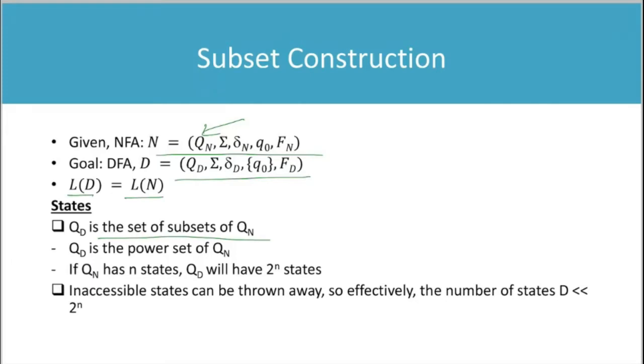QD is the power set of QN, as I already told you. If QN has N states, QD will have 2 to the power N states.